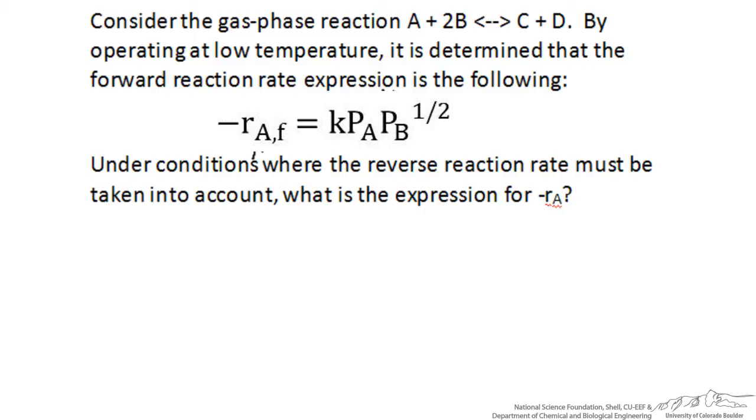In this problem, we're going to look at how to come up with the rate of a reverse reaction when the rate of a forward reaction that is non-elementary is specified. By operating at low temperature we measured just the forward rate of reaction, so we kept conversion very low.